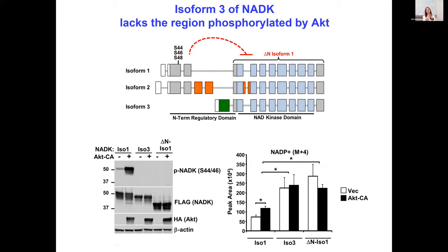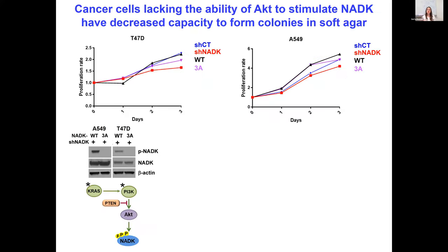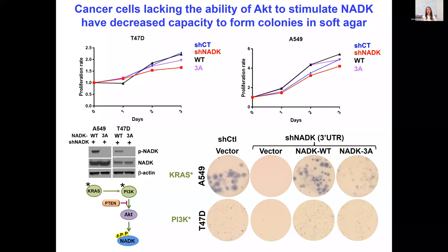Our data suggests the N-terminus region of NADK serves to inhibit the kinase domain of NADK. As for biological effects, we were surprised to see that when we knock out or knock down NAD kinase, we observe very little effect on 2D cell proliferation. Similarly, the phosphodeficient mutants had very little effect on cell proliferation. However, we found that loss of NADK had a profound effect on colony formation in soft agar — loss of NADK no longer allows colony formation. We can restore this by adding back wild type NADK, while the phosphodeficient mutant decreased the capacity for colony formation, suggesting these phosphorylation sites could be important during tumorigenesis.